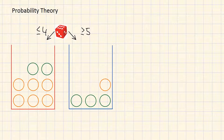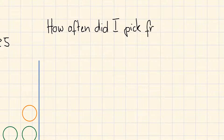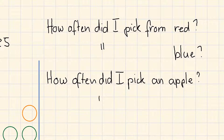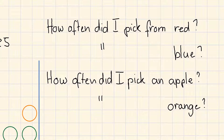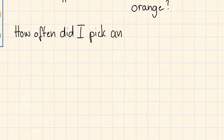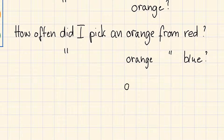Now for the outcome of the experiment we could ask ourselves a lot of questions. For example: how often did I pick the red box? How often did I pick the blue box? How often did I pick an orange from the red box? How often did I pick an orange from the blue box? And of course, how often did I pick an apple from the red box or from the blue box?